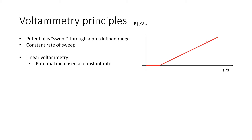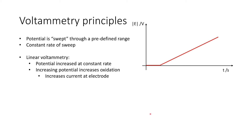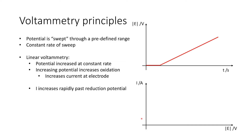Increasing the potential increases oxidation at the working electrode, and by increasing the oxidation we increase the current at that electrode. The current would be expected to increase rapidly past the reduction potential. Once past that potential, we expect the current to ramp up severely as we start oxidising the species at that electrode. What we see is that it reaches a maximum value, which is a key observation in voltammetry experiments.